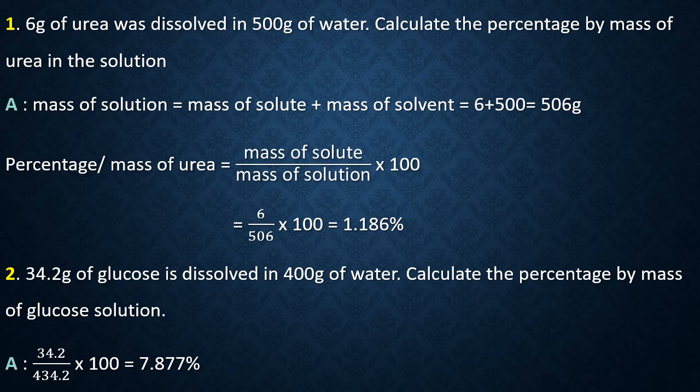Example 1: 6 grams of urea was dissolved in 500 grams of water. Calculate the percentage by mass of urea in the solution. Using the formula: mass percent = (mass of solute / mass of solution) × 100. The mass of solution = 6 g (urea) + 500 g (water) = 506 g. So, mass percent = (6 / 506) × 100 = 1.186 percent. This is the percentage by mass of urea.